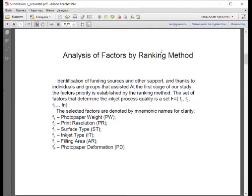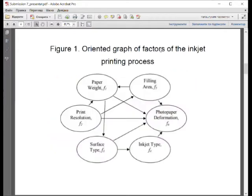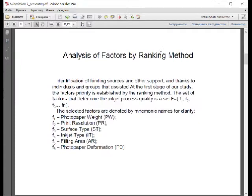At the first stage of our study, the factors priority is established by the ranking method. The set of factors that determine the inkjet process quality is a set F. The selected factors are denoted by mnemonic names for clarity, such as photo paper weight, print resolution, surface type, inkjet type, filling area, and photo paper deformation.